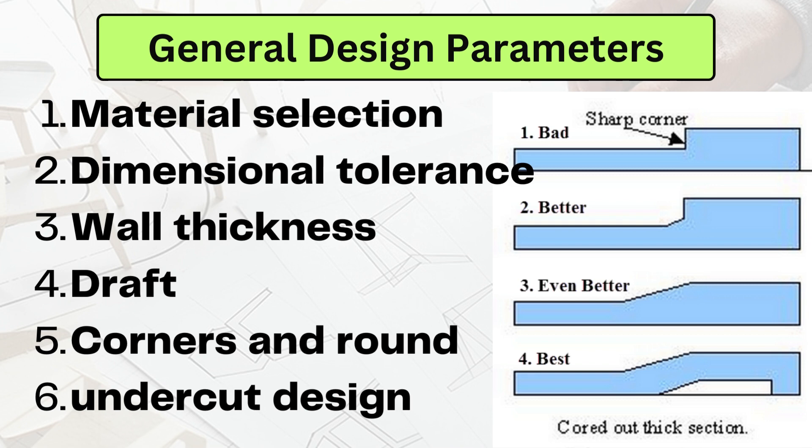In general design parameters, there are a number of factors to consider, such as draft, shrinkage, parting line, undercuts, and corner rounds. I will upload separate videos on the general design guidelines for plastic components.